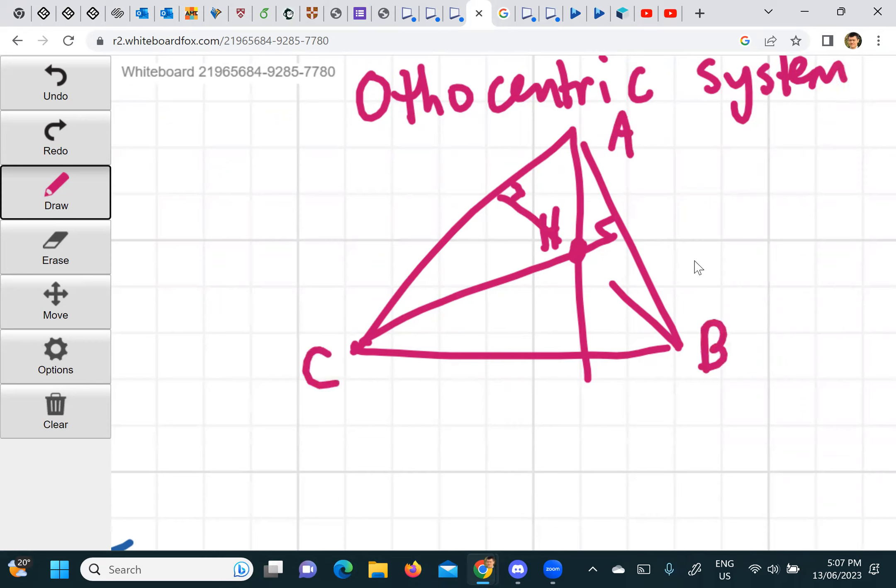What does it mean to be an orthocentric system? It means, maybe you can remind Andy when you come up as well, okay? But basically it means that if you take any three out of the four, yeah? Then the fourth thing is the orthocenter of the other three. So the four letters on the board. So H is the orthocenter of A, B, C, right?